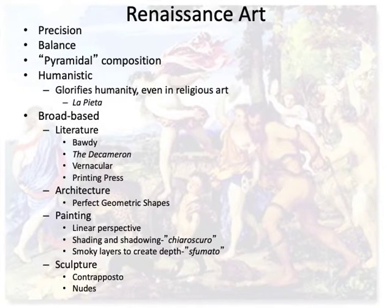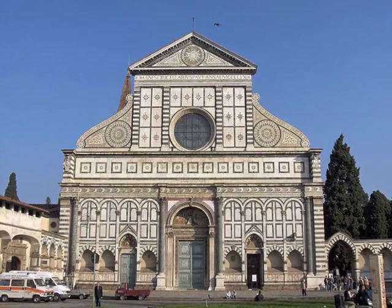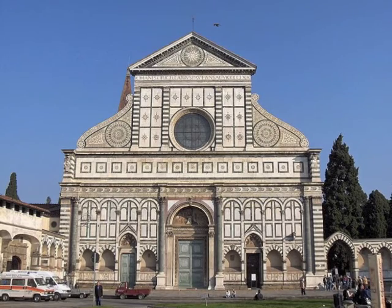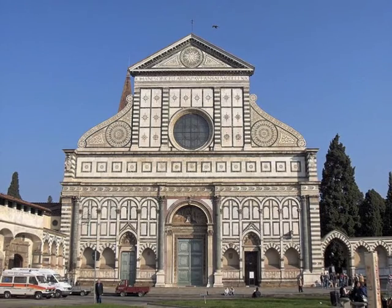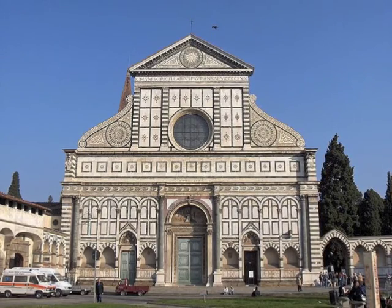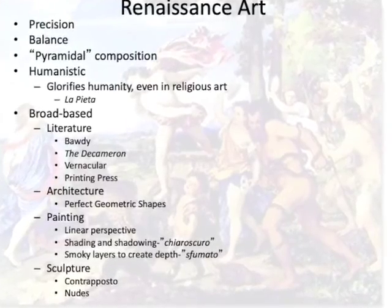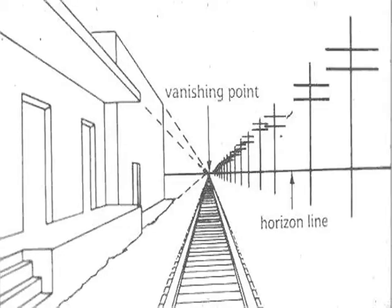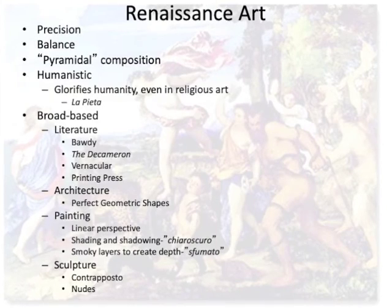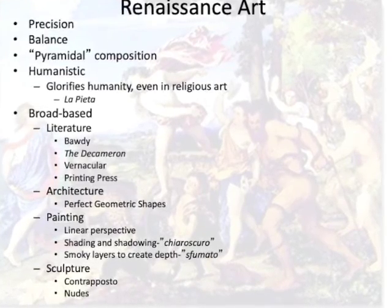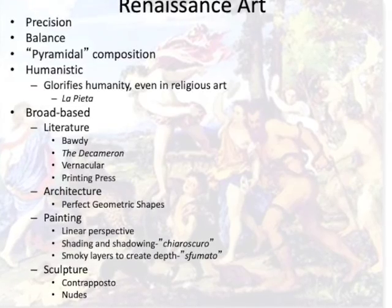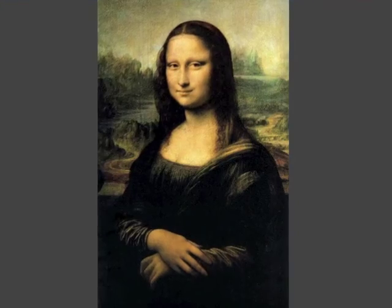In architecture, building design was based on so-called perfect shapes — combinations of basic geometric shapes combining squares, rectangles, circles, and triangles in balanced pyramidal designs to create some of the most beautiful buildings ever built. The revolution also extended to painting. The invention of linear perspective, which created the illusion of three dimensions, was joined by shading and shadowing, called chiaroscuro, and the technique of layering paint to create the illusion of depth without borders, called sfumato. Sfumato is most famously seen in Leonardo da Vinci's Mona Lisa.